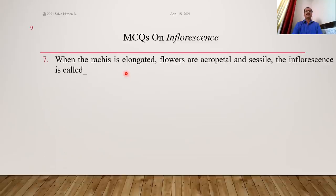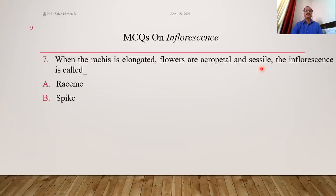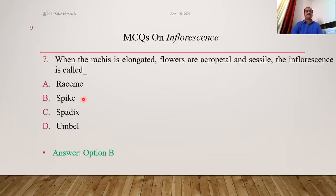When the rachis is elongated, flowers are acropetal just like raceme — but here the difference is that in raceme flowers are pedicellate, whereas here flowers are sessile (no stalk). Then the inflorescence is called spike. B is the answer.